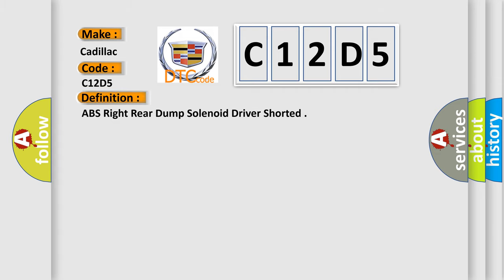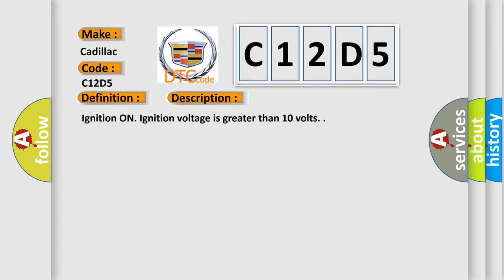The basic definition is: ABS right rear dump solenoid driver shorted. And now this is a short description of this DTC code. Ignition on, ignition voltage is greater than 10 volts.